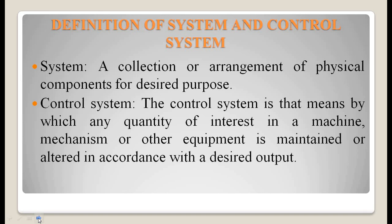The definition of system and control system: a system is a collection or arrangement of physical components for a desired purpose. A control system is that means by which any quantity of interest in a machine, mechanism, or other equipment is maintained or altered in accordance with the desired output.